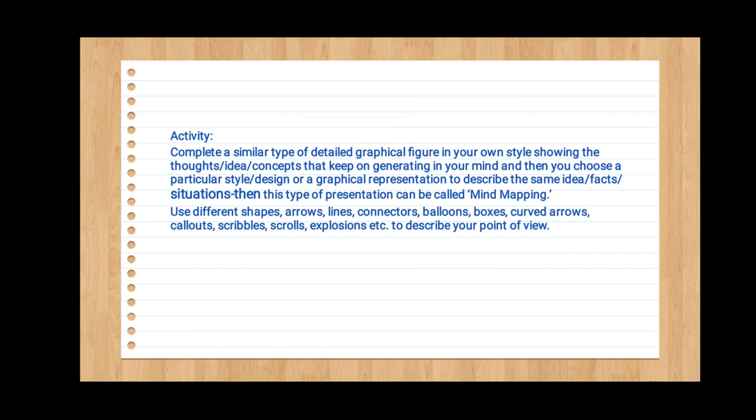The next activity is: complete a similar type of detailed graphical figure in your own style, showing thoughts, ideas, and concepts that keep generating in your mind. You choose a particular style, design, or graphical representation to describe the same idea, fact, or situation — this type of presentation is called mind mapping. Use different shapes, arrows, lines, connectors, balloons, boxes, curved arrows, callouts, scribbles, scrolls, explosions, etc. to describe your point of view.